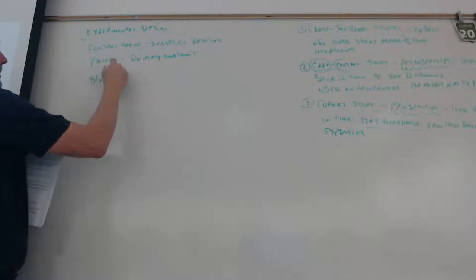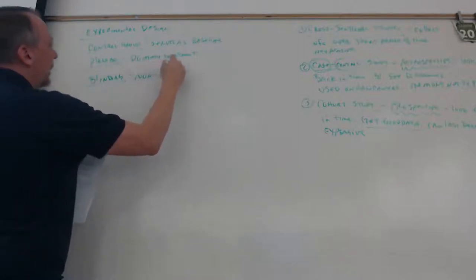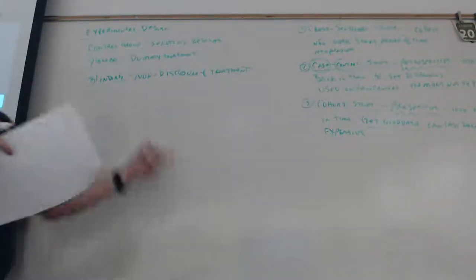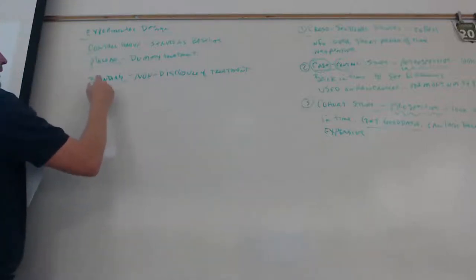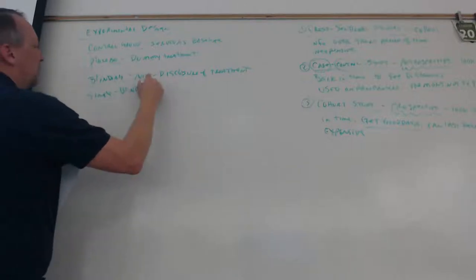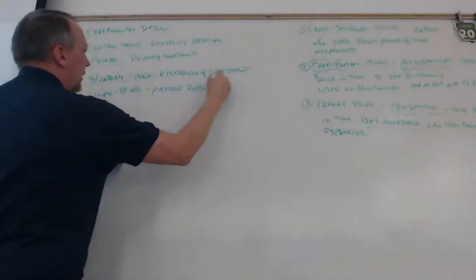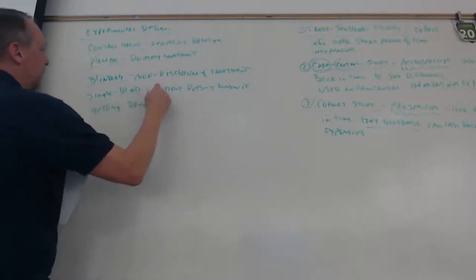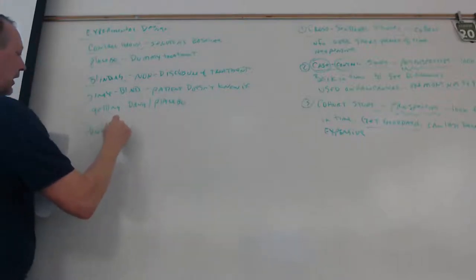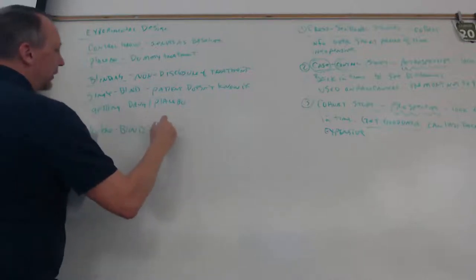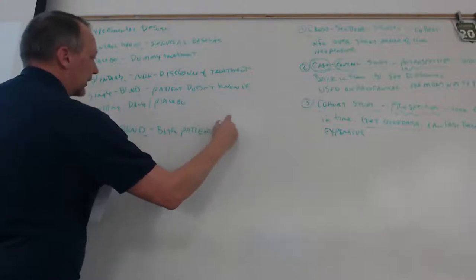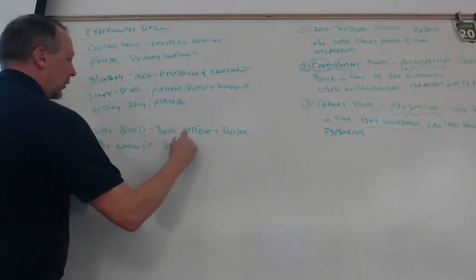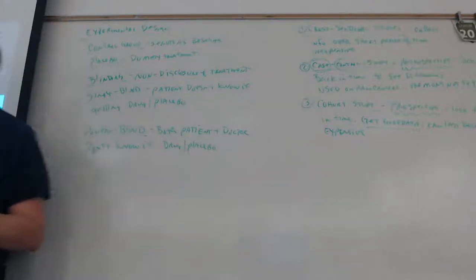The idea with a placebo that works much better is blinding — non-disclosure of treatment. You don't know if you're getting the drug or the placebo. We have two types: single blind, where the patient doesn't know if they're getting the drug or the placebo, and double blind, where both the patient and the doctor don't know which treatment is being given.